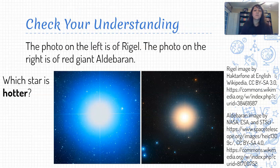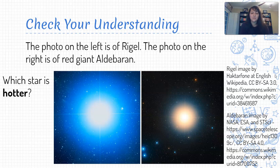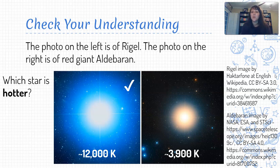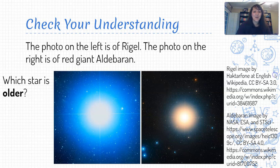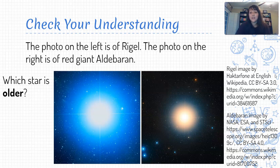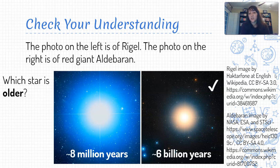Let's finish up with a check for understanding. We've got two pictures of stars: Rigel on the left, and the red giant Aldebaran on the right. First question: which star is hotter? How do you know? Well, Rigel is hotter and we can tell because it is blue. We've measured Rigel based on that radiation to be about 12,000 Kelvin, whereas Aldebaran is about 4,000 Kelvin — still hot, but not as hot. Next: which of these stars is older? Rigel is a blue star on the main sequence. Aldebaran is a red giant. Main sequence stars turn into red giants over time, so it stands to reason that Aldebaran is older — and indeed it is. Rigel is estimated at about 8 million years old, whereas Aldebaran is more on the order of 6 billion years old.